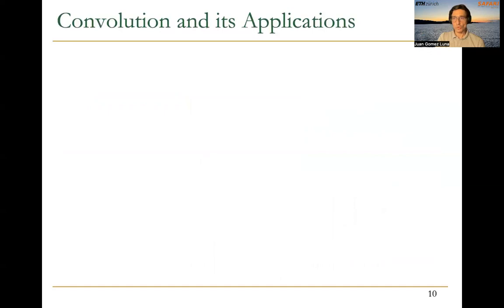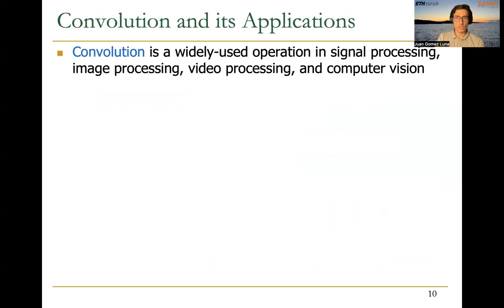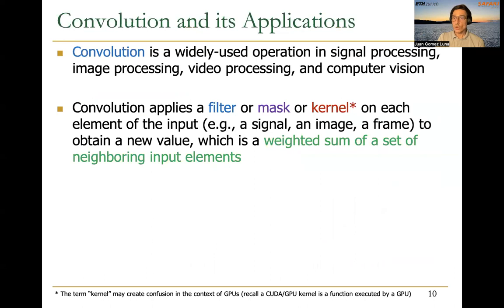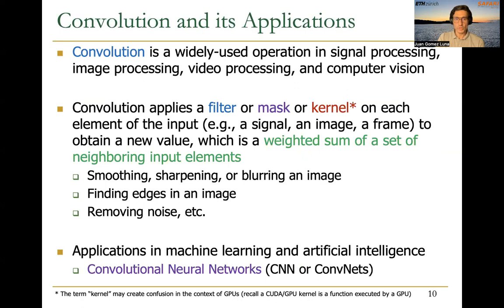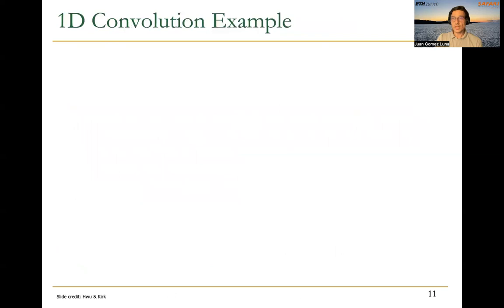Today, we are going to talk about another important parallel pattern: convolution. Convolution has many applications — it's a widely used operation in signal processing, image processing, video processing, and computer vision. Basically, convolution applies a filter or a mask, also sometimes called a kernel, though in this course we avoid that term because it can be confused with CUDA or GPU kernels. The idea is to apply this filter or mask on each element of the input — a signal, an image, or a frame of a video — to obtain a new value, which is a weighted sum of neighboring input elements. This is useful in image processing for smoothing, sharpening, or blurring an image, finding edges, or removing noise. Convolutions are also very much used in machine learning and artificial intelligence, especially as convolutional layers in convolutional neural networks (CNNs or ConvNets).